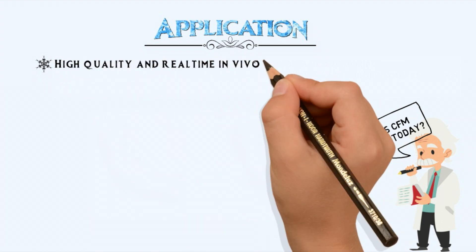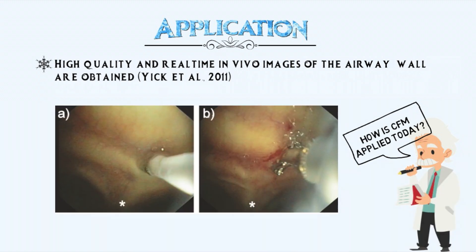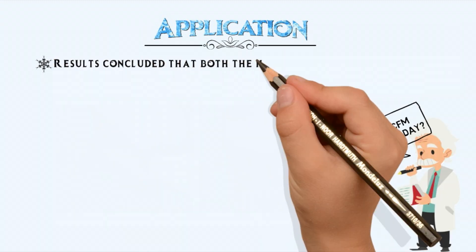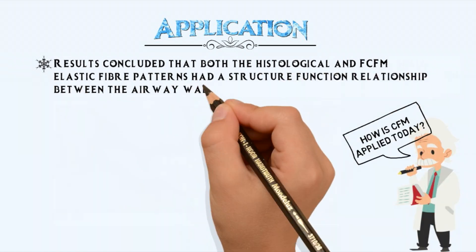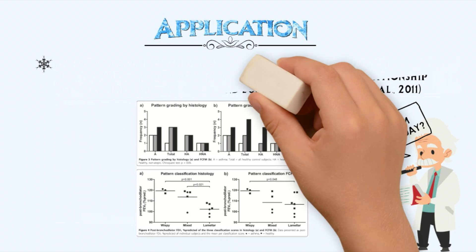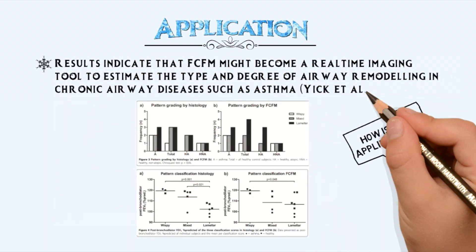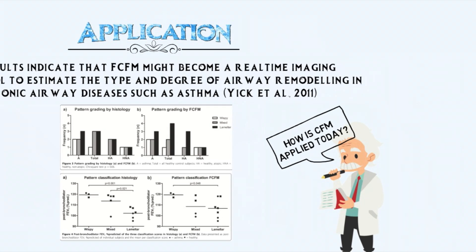Through FCFM, high-quality and real-time in vivo images of the airway wall are obtained by placing the tip of the mini-probe onto the airway wall surface. Another advantage of FCFM is the ability to reach and therefore visualize the alveoli in vivo. The results concluded that both the histological and FCFM elastic fiber patterns had a structure-function relationship between the airway wall and lung function, indicating that FCFM might become a real-time imaging tool to estimate the type and degree of airway remodeling in chronic airway diseases such as asthma.